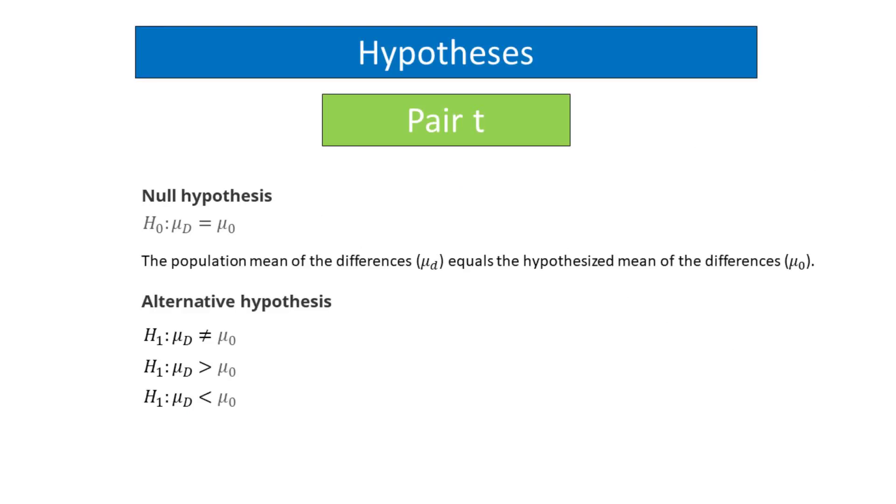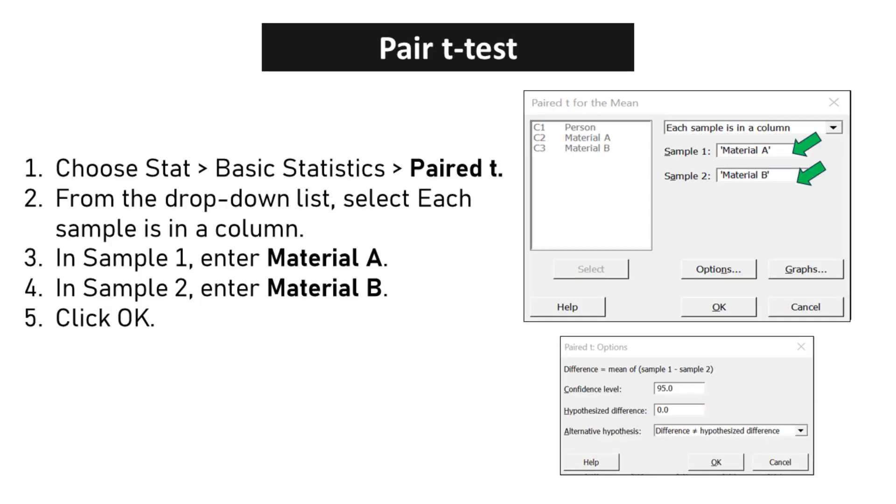Pair t-test. The null hypothesis for a paired t-test is that the mean difference between the paired samples is 0. The alternative hypothesis is that the mean difference is not equal to 0. Choose STAT basic statistics paired t. From the drop-down list, select each sample is in a column. In sample 1, enter material A. In sample 2, enter material B. Click OK.